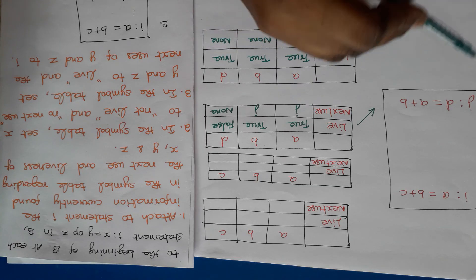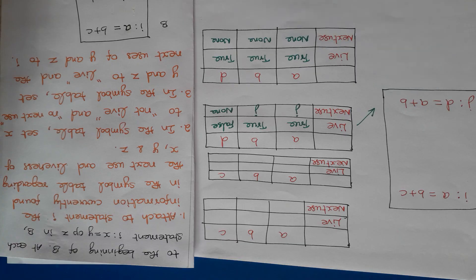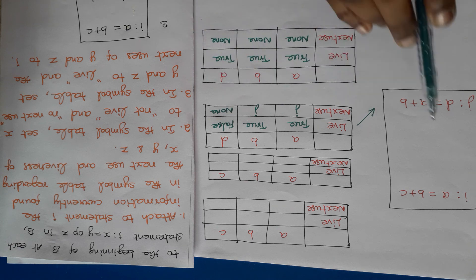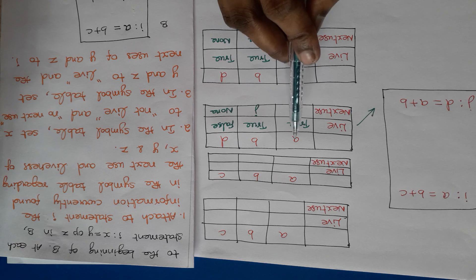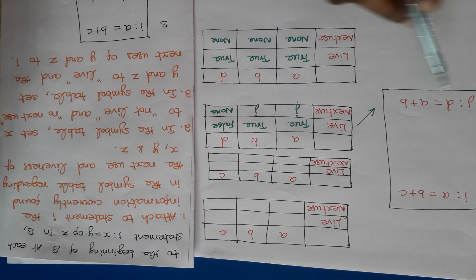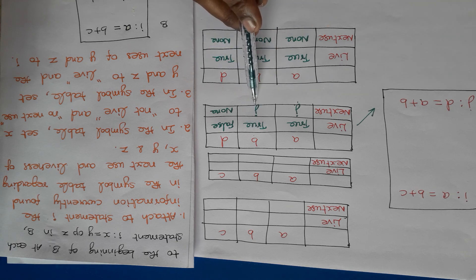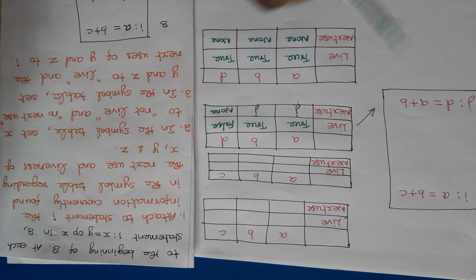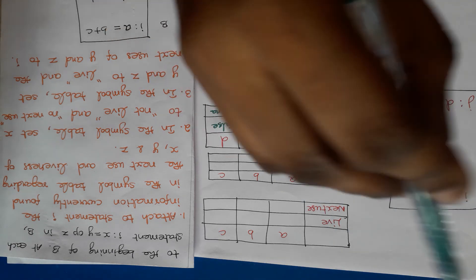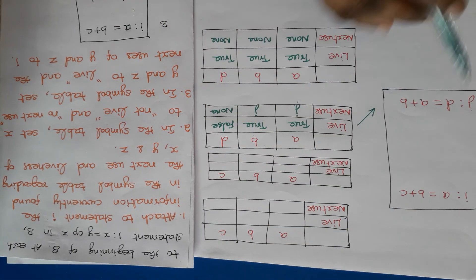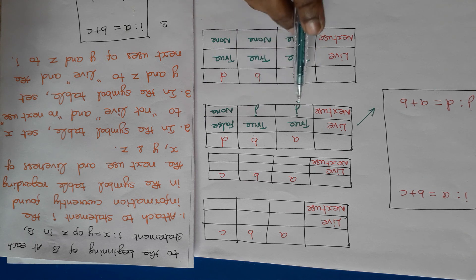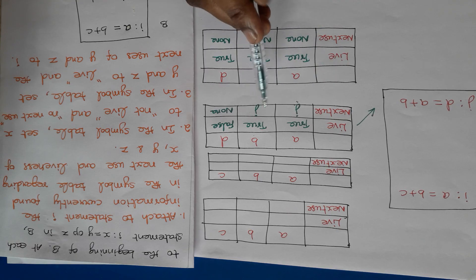This is determined before statement j. In the forward scan, while executing the program, before reaching statement i, if we check the liveness and next use information, we can know that a has next use at statement j and b also has next use at statement j. So these registers cannot be assigned to some other statement. The backward scan algorithm assigns liveness and next use information, but while constructing the target program, we use the forward scan. Before j, we know a and b have next use at j, so they cannot be allocated to some other purpose.